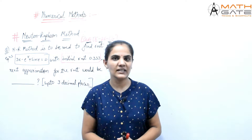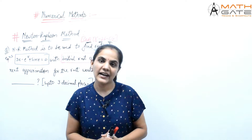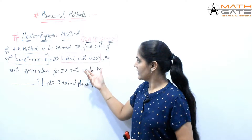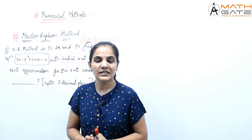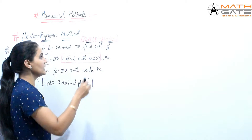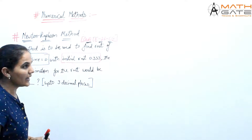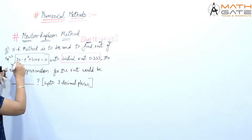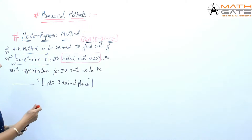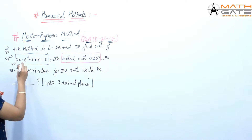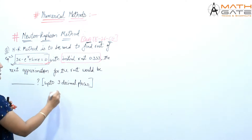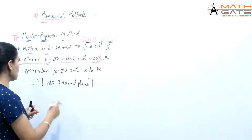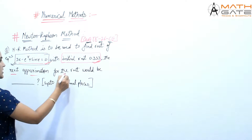Hello students, welcome to Math Gate. Let's discuss the GATE problems based on Newton-Raphson method. This question has been asked in GATE 2016 Civil branch. The question is: Newton-Raphson method is to be used to find the root of the equation 3x minus e to the power x plus sin x equals 0, with the initial root 0.333.